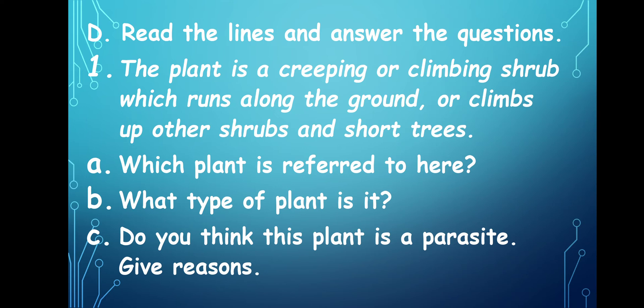Let's look at the first one. Exercise D: read the lines and answer the questions. The first sentence from the lesson is: 'The plant is a creeping or climbing shrub which runs along the ground or climbs up other shrubs and short trees.' The first question is: which plant is referred to here? The pitcher plant is referred to here.